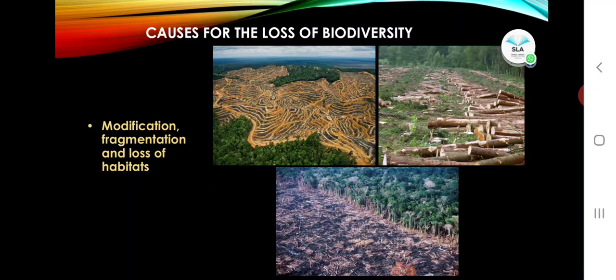We can categorize the causes of biodiversity loss into three main heads. The first is modification, fragmentation, and loss of habitats. The second is introduction of exotic or non-native, foreign, or alien species. The third is over-exploitation of biotic resources, extensive urbanization, massive industrialization, environmental pollution, extension of intensive agriculture, and large-scale deforestation.